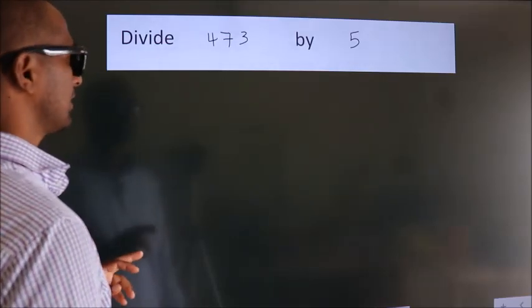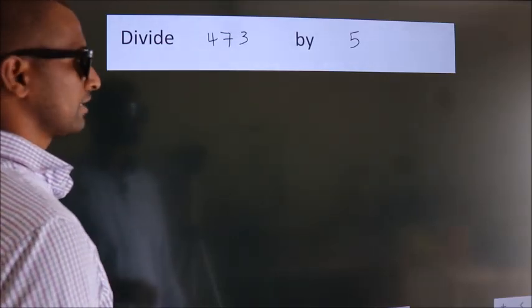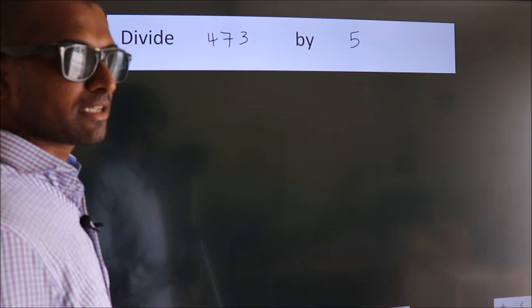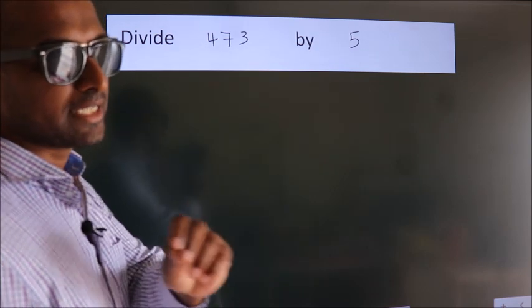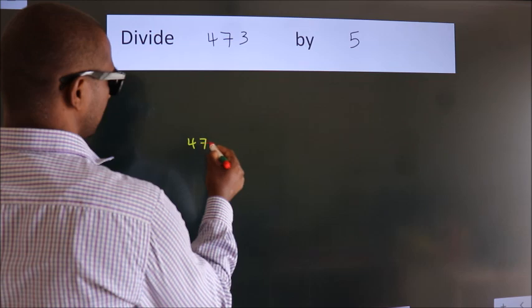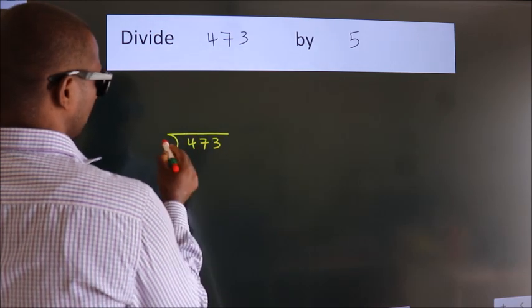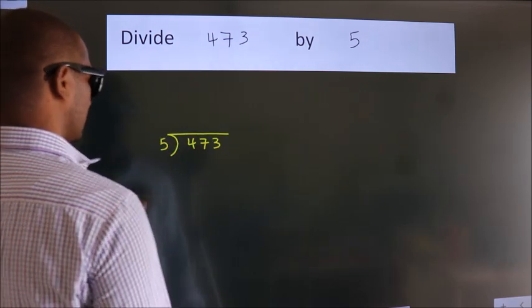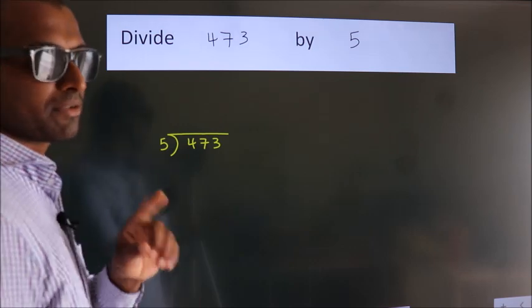Divide 473 by 5. To do this division, we should frame it in this way. 473 here, 5 here. This is your step 1.